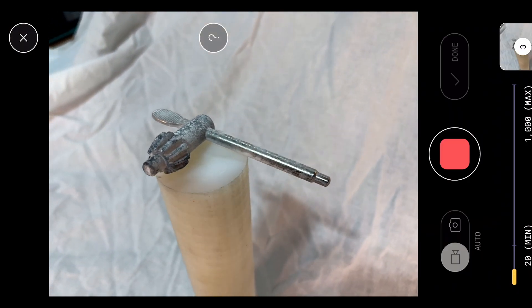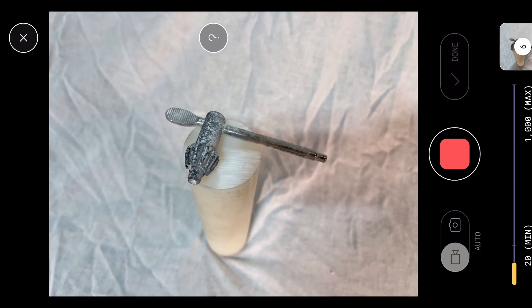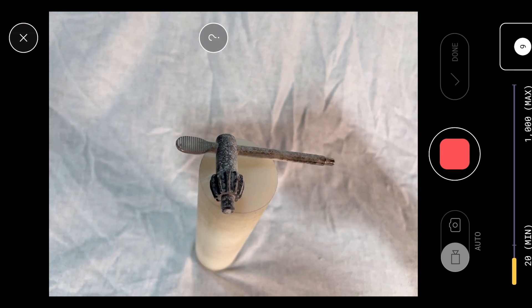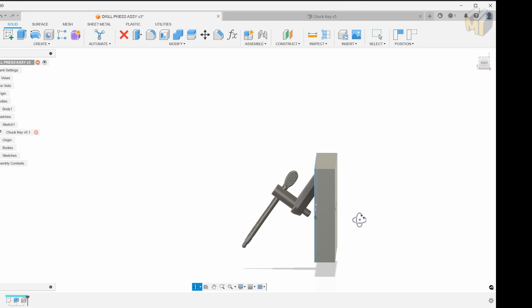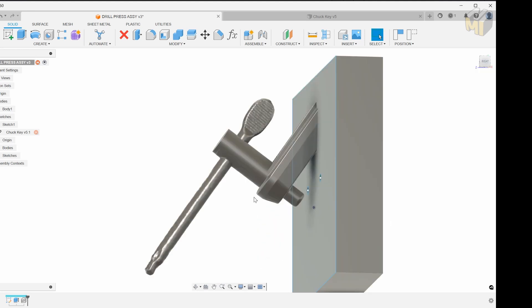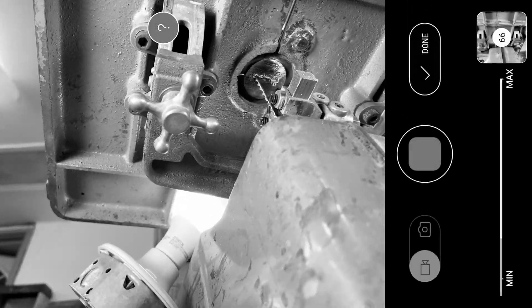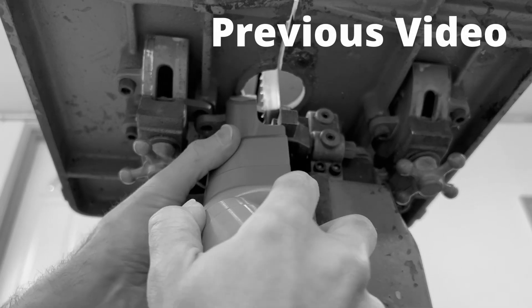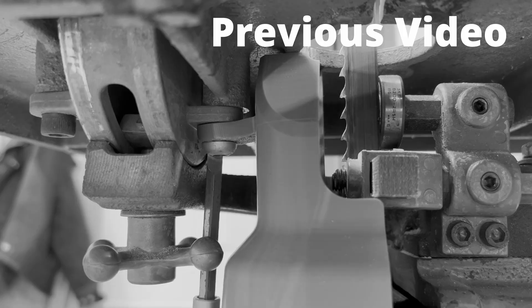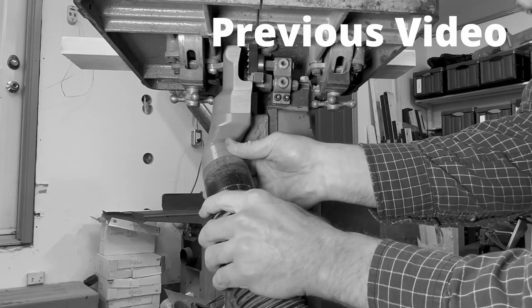First I'm going to scan these using Polycam. Now technically you don't need all sides of these tools, but I like to get them as complete as I can because having an entirely closed part is much easier to work with. I've already made some videos on 3D scanning using Polycam. I'll cover the main parts here, but if you want more info, check out the video link up at the top.